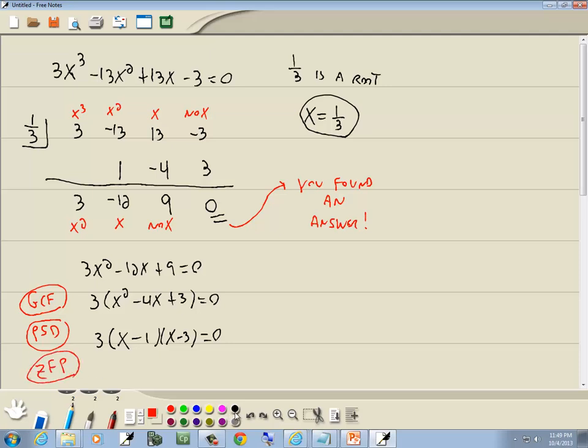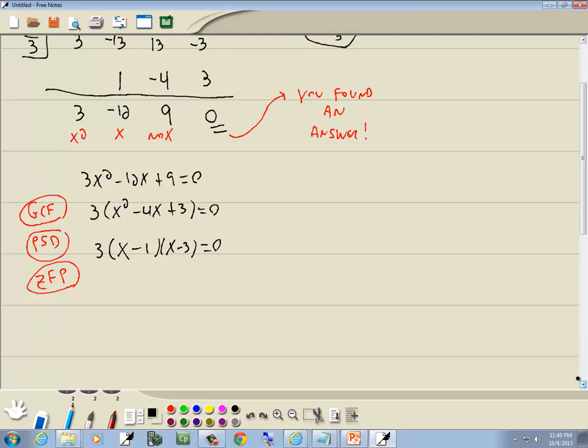Zero factor property. You get 0 on one side, you factor the other side, you set each factor equal to 0. Now, we don't need to set the 3 equal to 0 because there's no variable there to solve for. But I'll set the x minus 1 equal to 0, and I'll set the x minus 3 equal to 0. And then we solve those. We get x equals 1 and x is equal to 3.